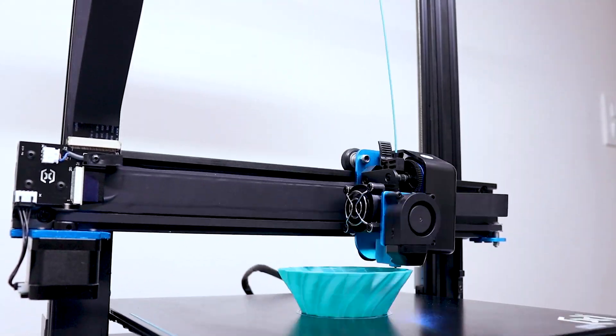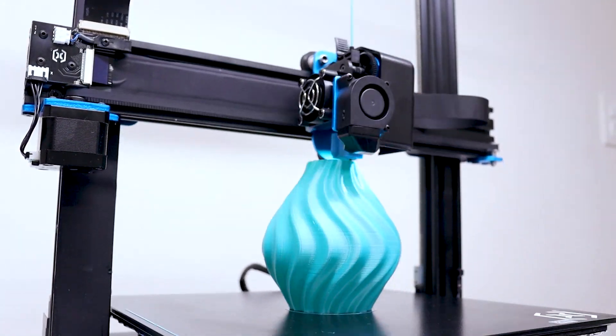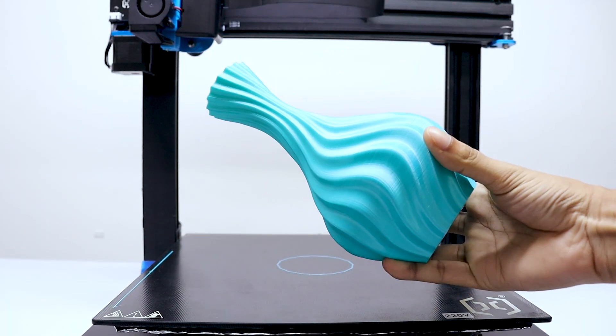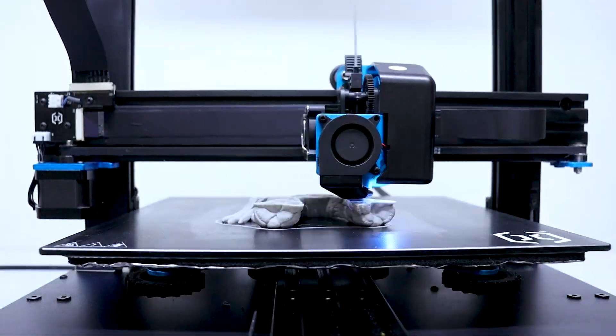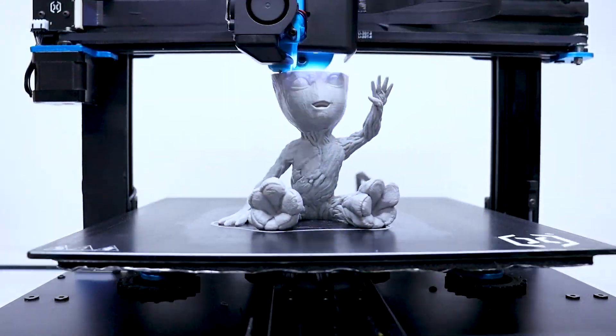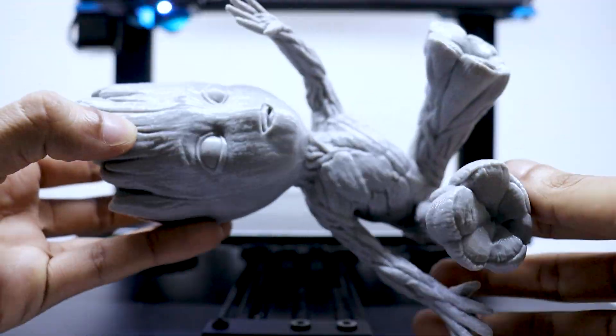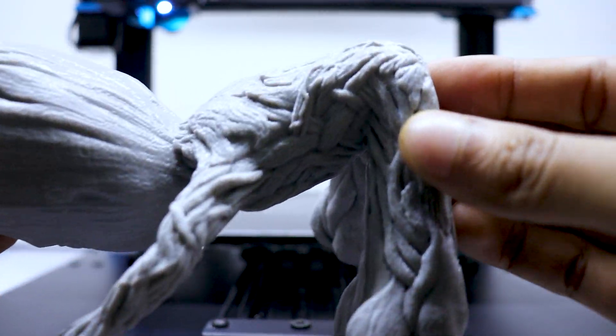Next I printed a twisty vase at 0.2mm layer height and it turned out really well. After that I printed Baby Groot at a much finer 0.1mm layer height and the level of detail here is mind-blowing.